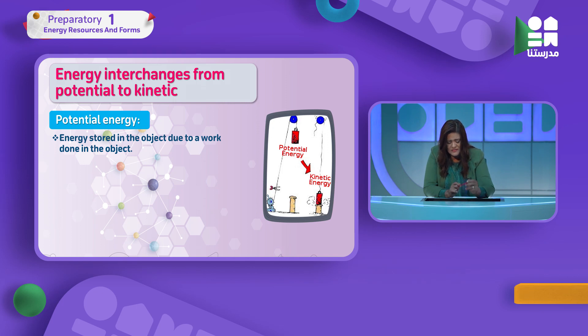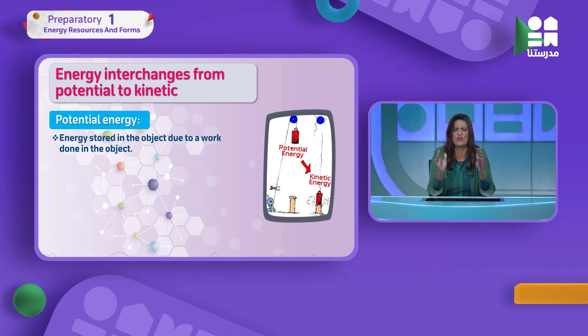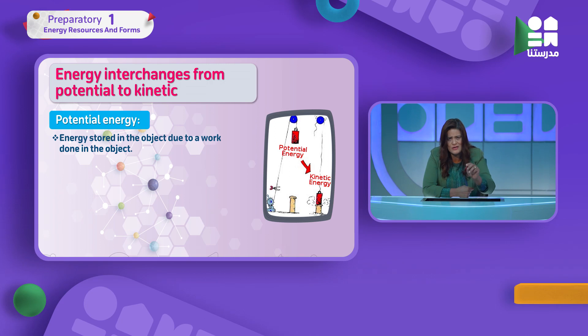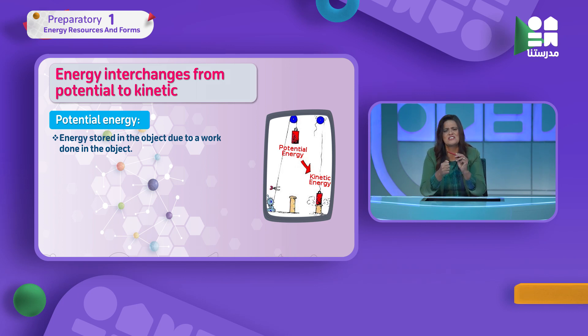When I raise a ball to maximum height, I have maximum potential energy. Once I release it, it starts coming down — gradually potential energy converts to kinetic energy, and gradually more and more, until just before reaching the ground, at that moment, there is maximum kinetic energy.